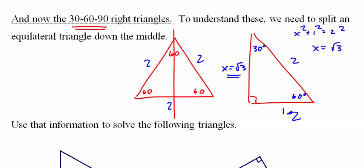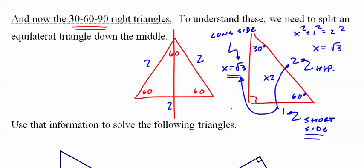So, for example, I call this the short side, this is still the hypotenuse, and I call this the long side. Find the short side, double it, and multiply by root 3.